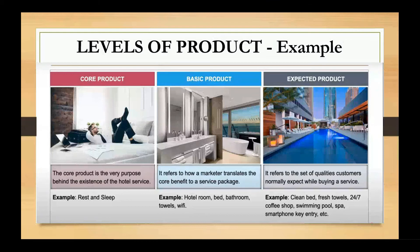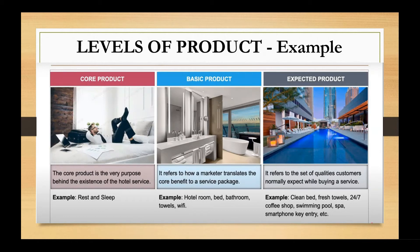Let us move to the hotel room example to better understand all levels. The core level — the first level — gives you rest and sleep. Moving to the second level, the generic level: you get the hotel room, the bed, the bathroom, towels, and Wi-Fi — the general facilities or features of the product you have taken on rent.